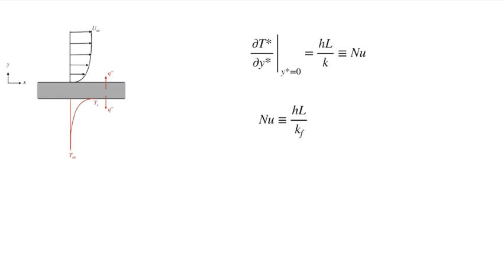It's important to note — I'll write it explicitly as k_f here. You may recognize this combination of variables from the Biot number, but in the Biot number we're talking about a solid. Here we're talking about the fluid around our surface, and we're describing this temperature gradient in a non-dimensional sense at the wall using the fluid conductivity.